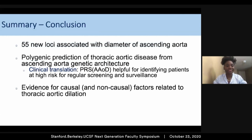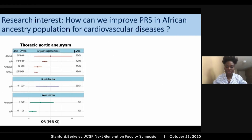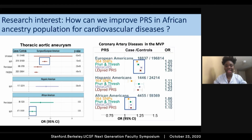To summarize, we found 55 new loci associated with ascending aorta diameter. We showed that polygenic risk score of aorta diameter can predict the risk of thoracic aortic aneurysm, and in terms of clinical translation, this information can be helpful to identify patients at high risk for regular screening and surveillance. We also showed causal evidence linking aneurysm risk factors to dilation of thoracic aorta. We observed a reduction in performance of the polygenic risk score particularly in African-American populations compared to European, a finding seen across multiple cohorts and studies including coronary artery disease. My research interest is to develop new approaches for improving polygenic risk prediction for cardiovascular disease in African ancestry populations.